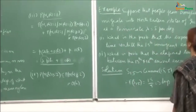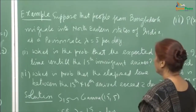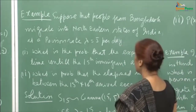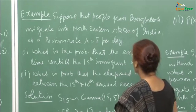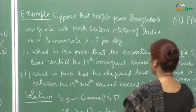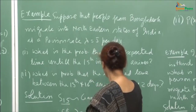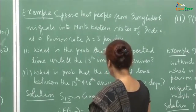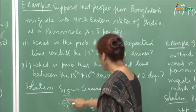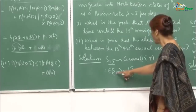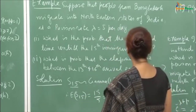Example: Suppose people from Bangladesh migrate into northeastern states of India at a Poisson rate of λ = 5 per day. The expected time until the 15th immigrant arrives is E[S_15], where S_15 ~ Gamma(15, 5), so E[S_15] = 15/5 = 3 days.